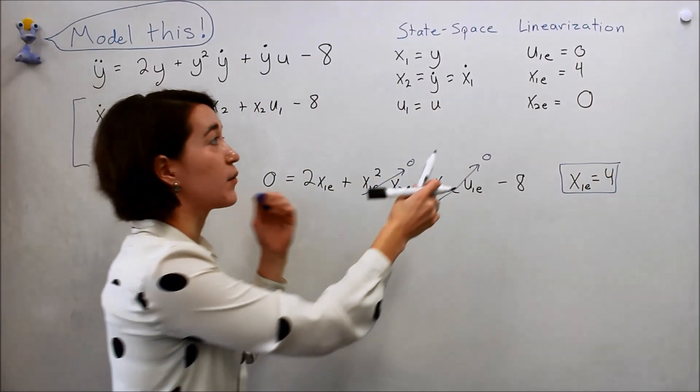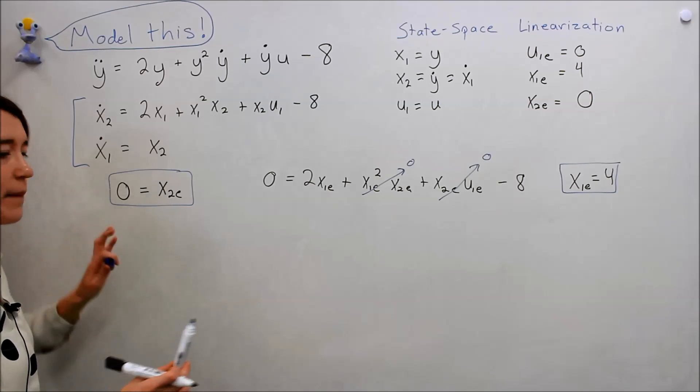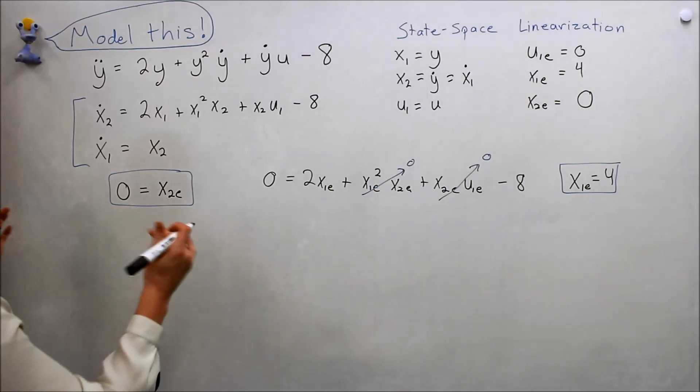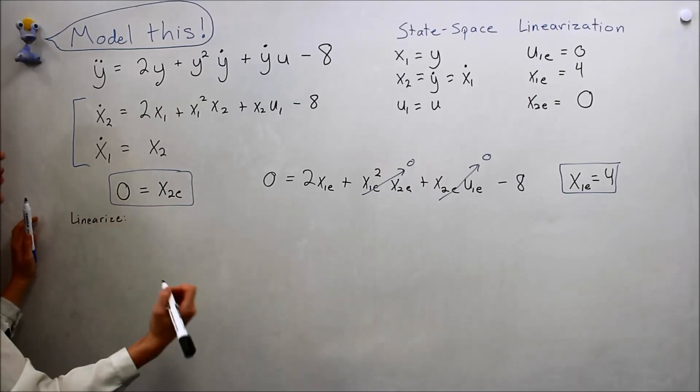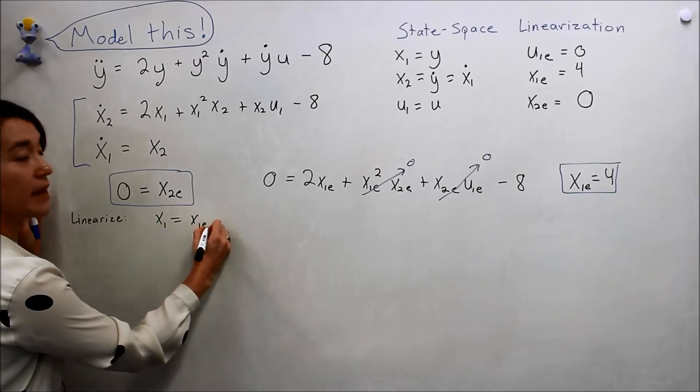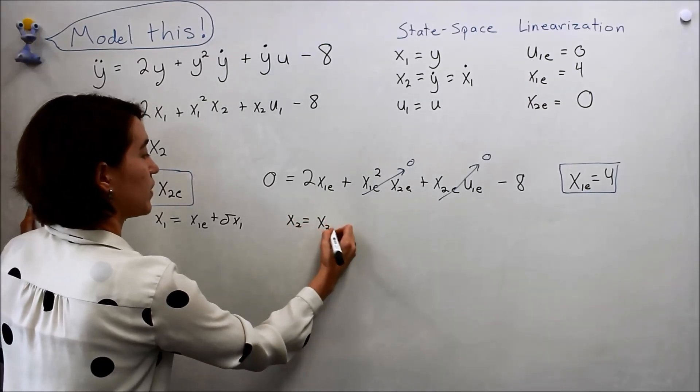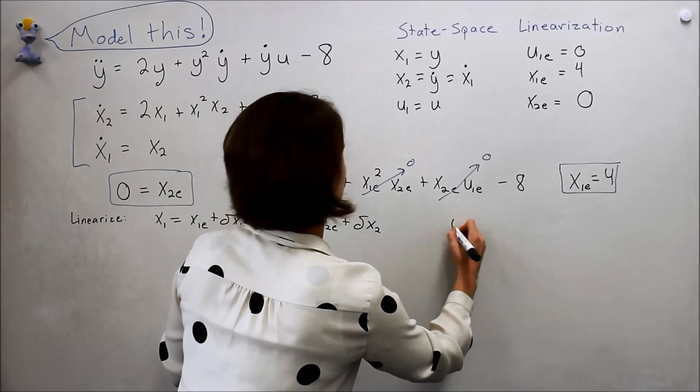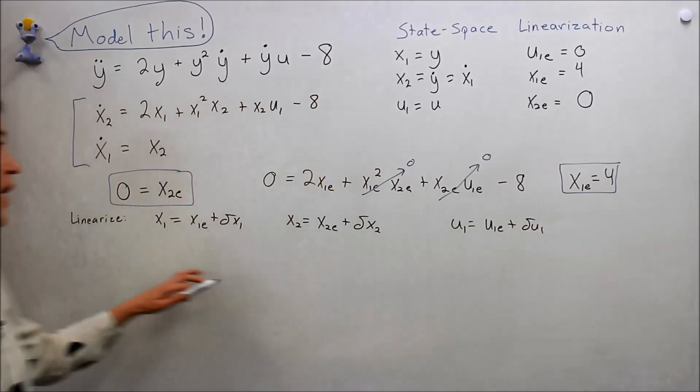The nice thing about these being broken up is we can just do one at a time. So let's start with x1 dot. Remember that when we linearize, we have to rewrite our variables. So x1 now becomes x1e plus delta x1, x2 equals x2e plus delta x2, and the same for u: u1 equals u1e plus delta u1. So we have our new variables here.